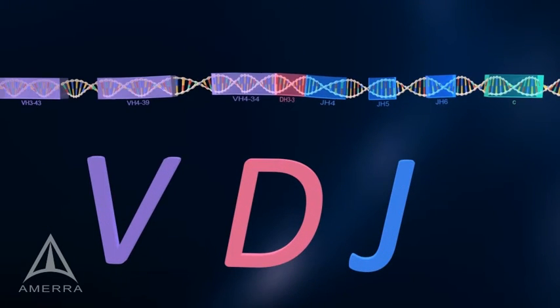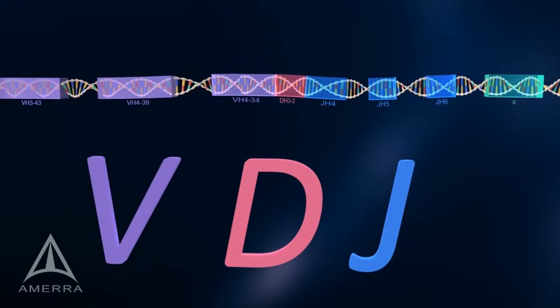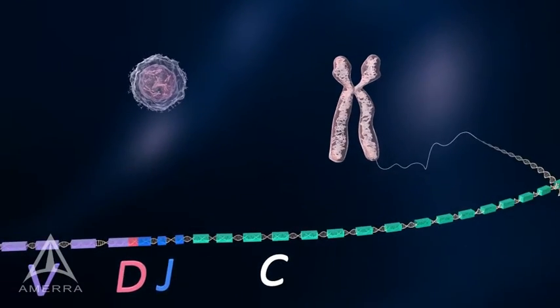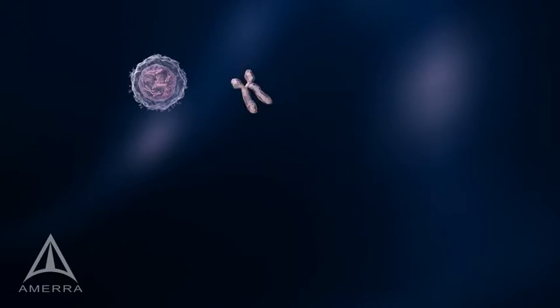As we take a closer look, we have now made one version of thousands of possible combinations of these V, D, and J gene segments. Each B cell will produce only one type of antibody based on these recombination events.